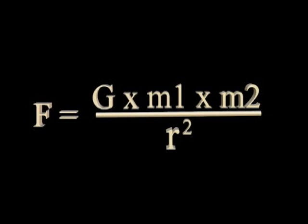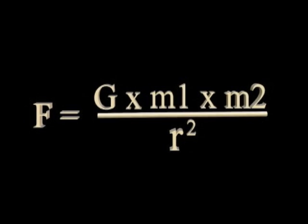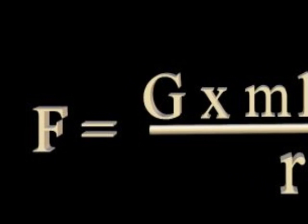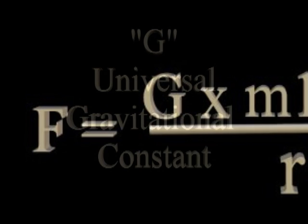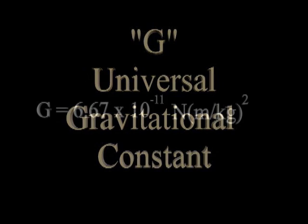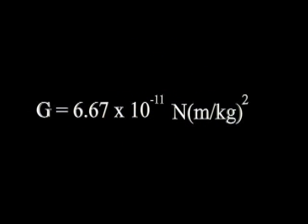F equals G times M1 times M2 divided by R squared. This is similar to Newton's statement, but notice we now have a capital G in the formula and an equal sign. The capital letter G represents the universal gravitational constant. Cavendish's work was essential to determining G. G represents this number, 6.67 times 10 to the minus 11th. And it completes Newton's formula.